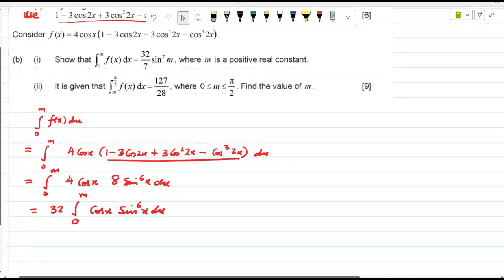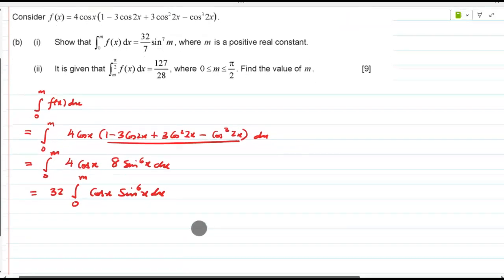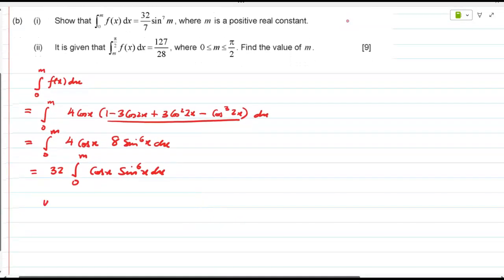What will you substitute U as? Sine. Correct, right. Cos are related to sin. Always you have to substitute into the bigger power.